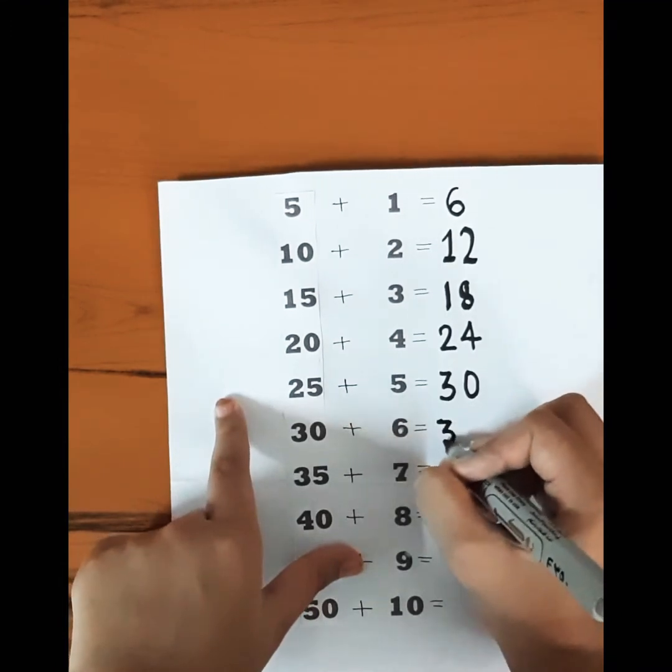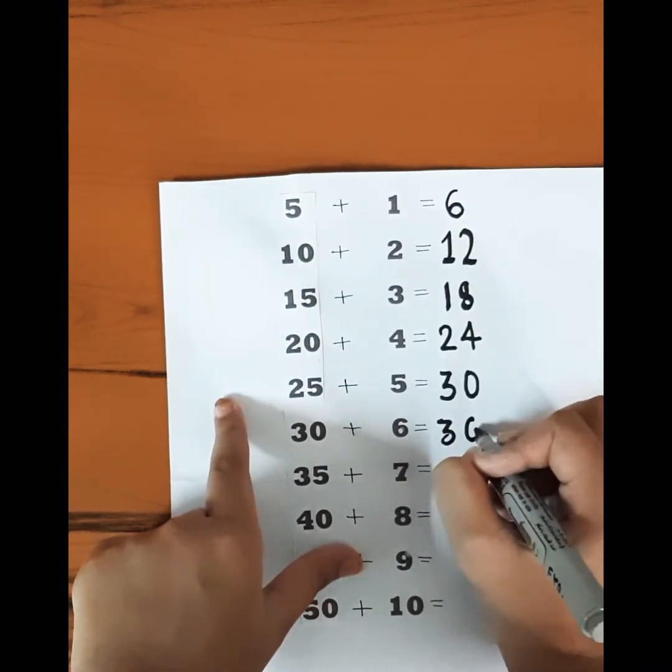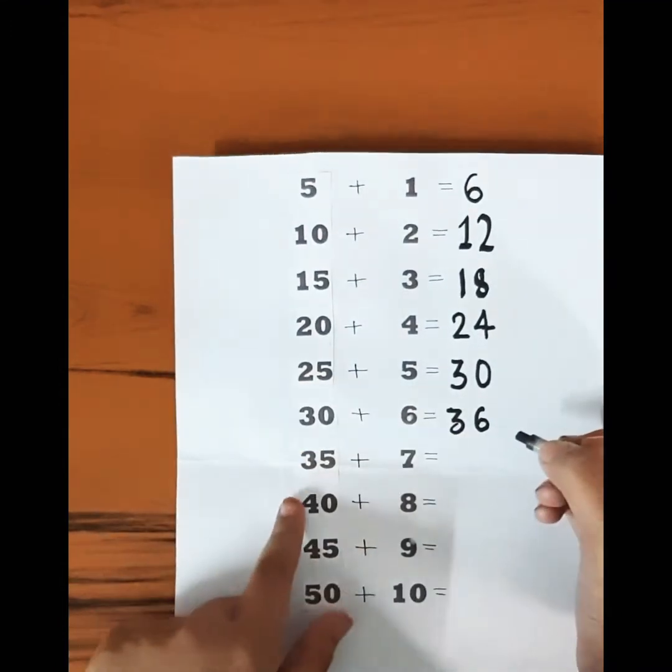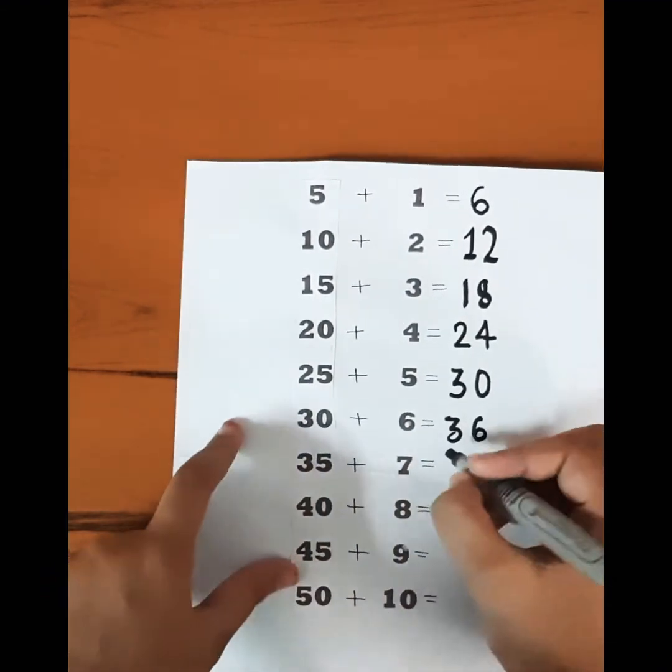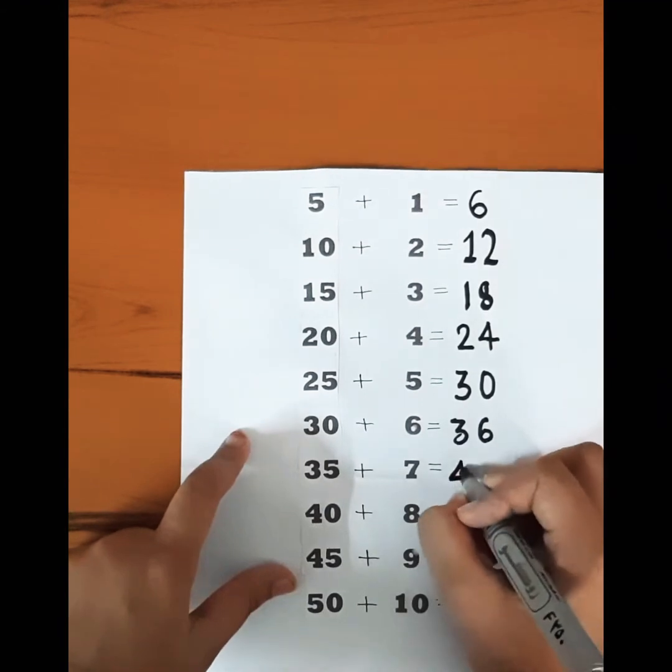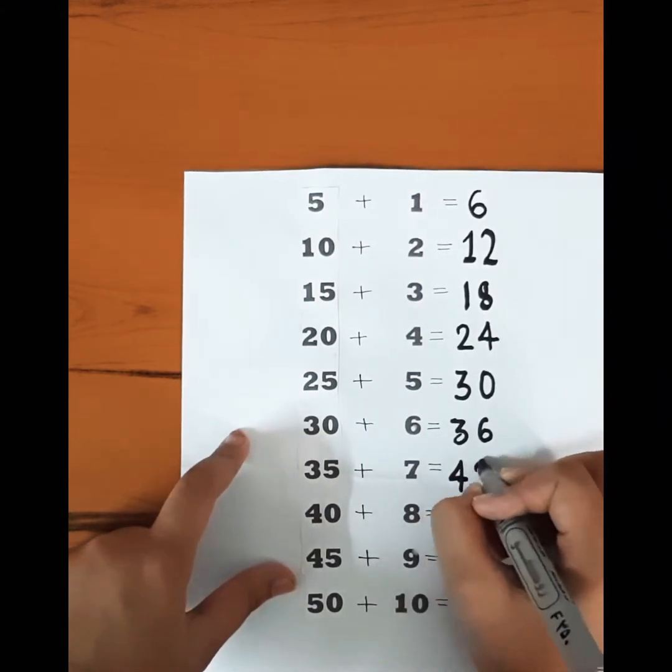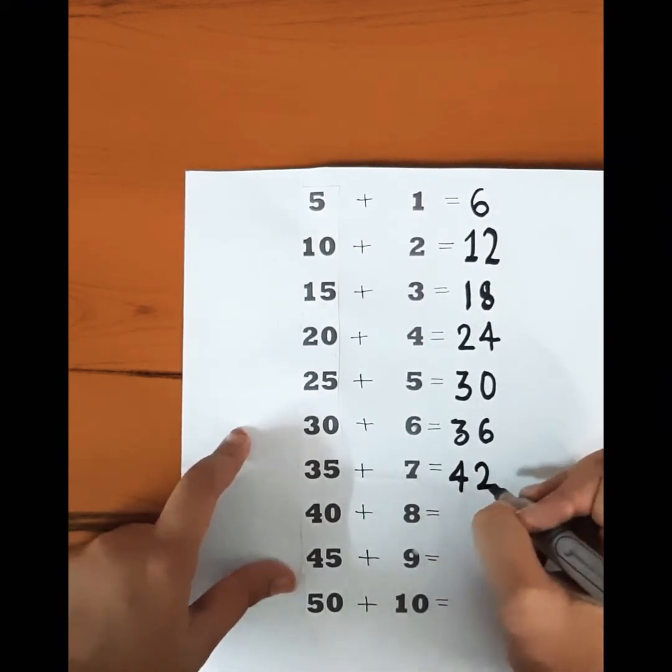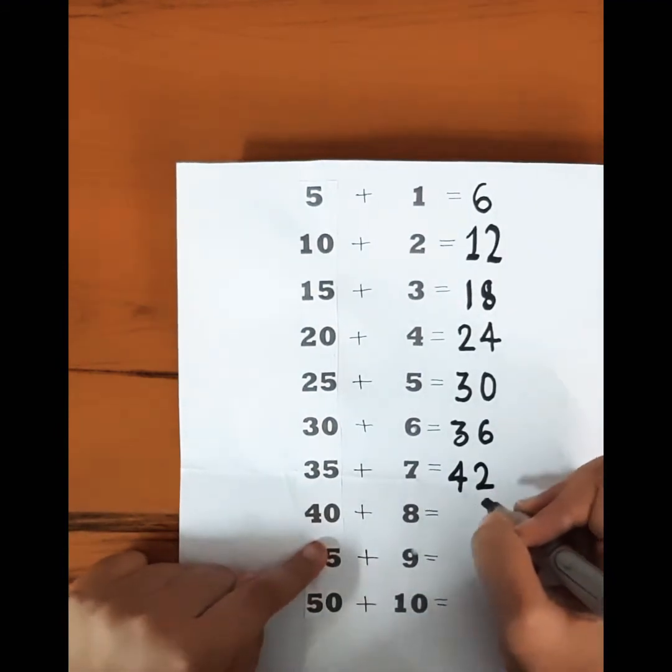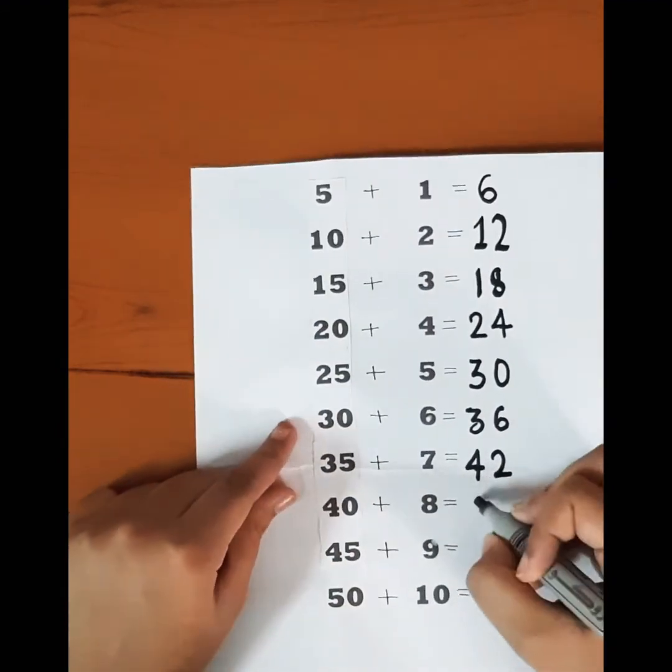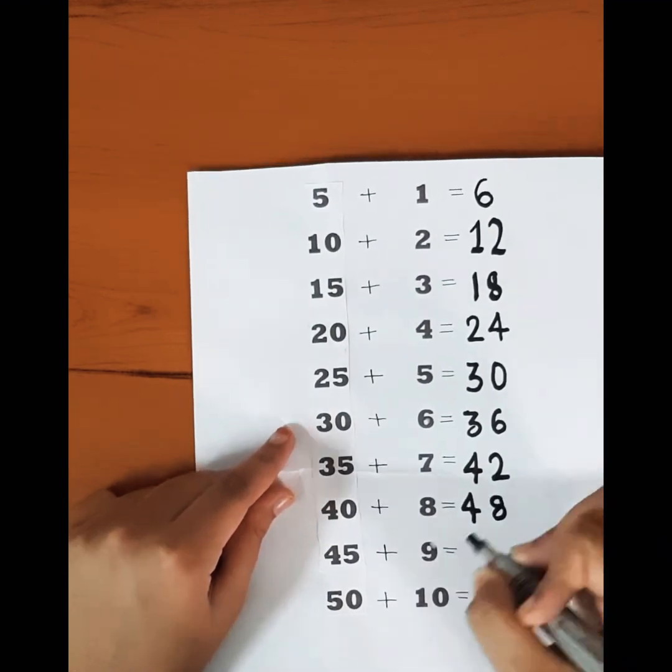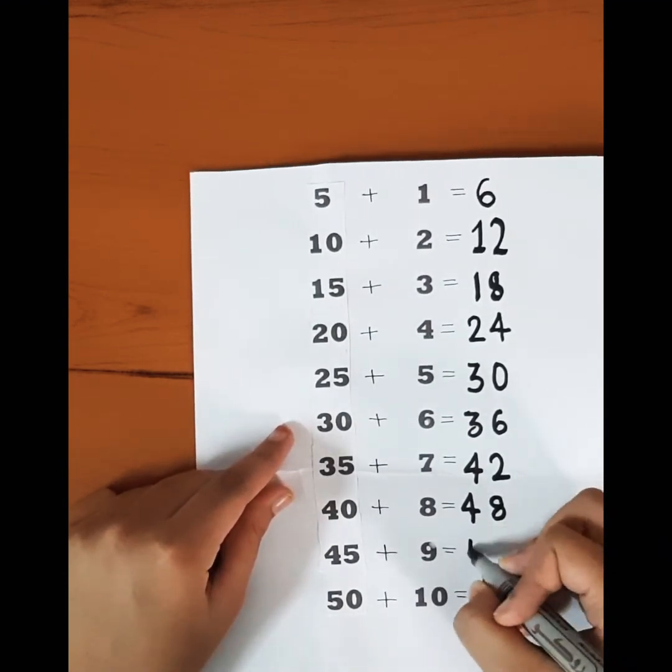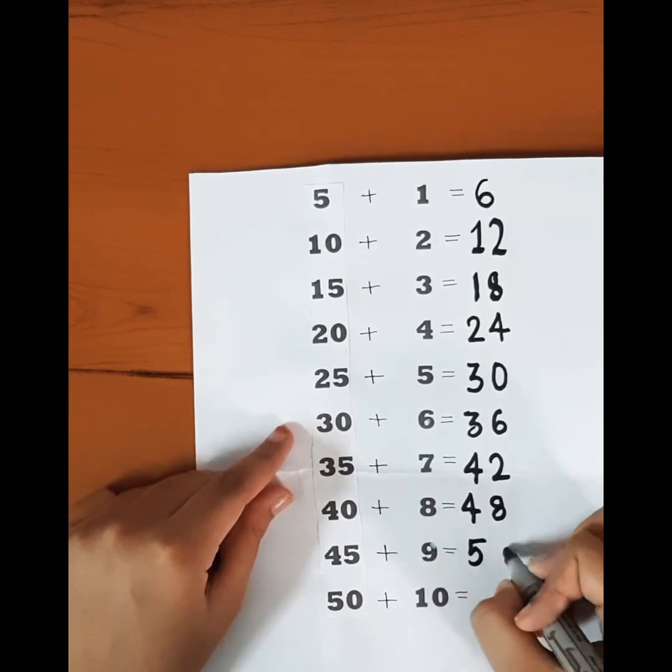Thirty-five plus seven is equal to forty-two. Forty plus eight is equal to forty-eight. Forty-five plus nine is equal to fifty-four.